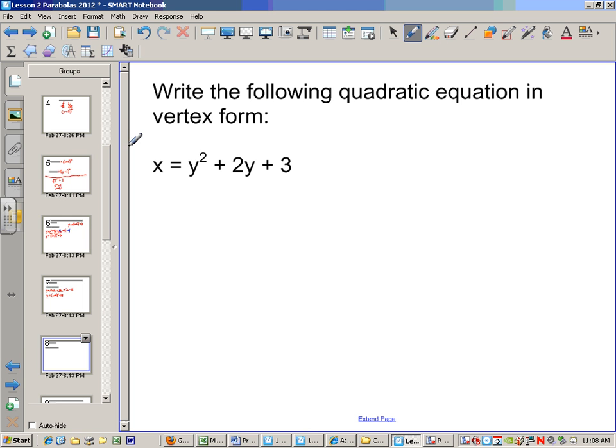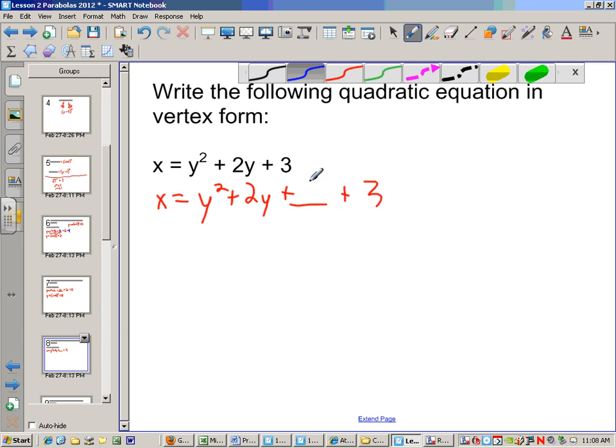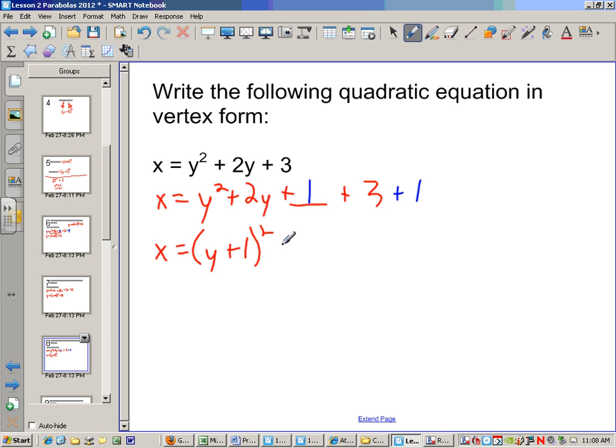Now we just flip-flop the x's and y's. We'll have y squared plus 2y plus some number. That number is going to be 1, because half of 2 squared is 1. Put that on both sides. So now I have x equals y plus 1 squared plus 4.